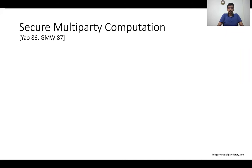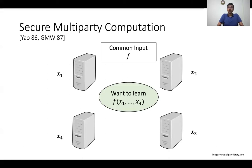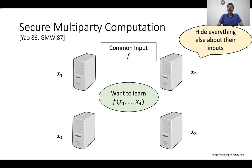Let me start this talk by briefly recalling the notion of secure multi-party computation. Here there are several parties and each party has its own private input. We denote the private input of the ith party by x_i. The parties also have a common input which is the description of some function f, and the parties want to learn the output of this function applied on their private inputs.